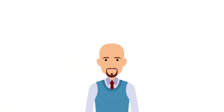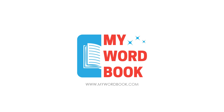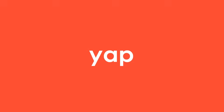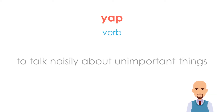Hello everyone, welcome to my wordbook.com. In today's video I have a new word for you. Let's find out what it means and how you can use it in daily conversation. Yap — it is a verb. Basically, yap means to talk noisily about unimportant things. Let's take a few examples of yap.